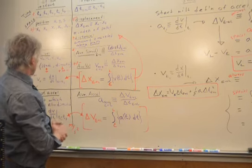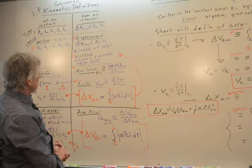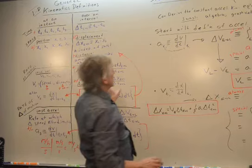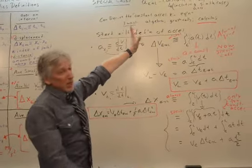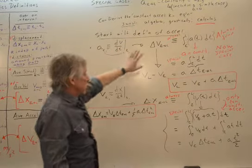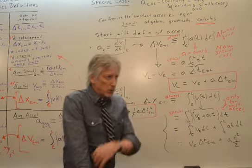One-dimensional motion. This is what it means. These are what these concepts mean. We take them into a special case, which is really useful, where the acceleration is constant. Maybe zero, that's super easy. Then just put A equals zero, and these equations become trivial.